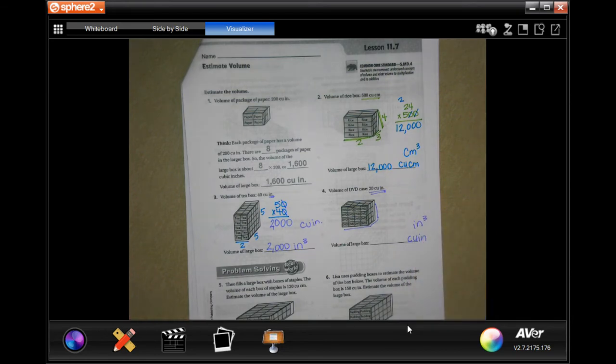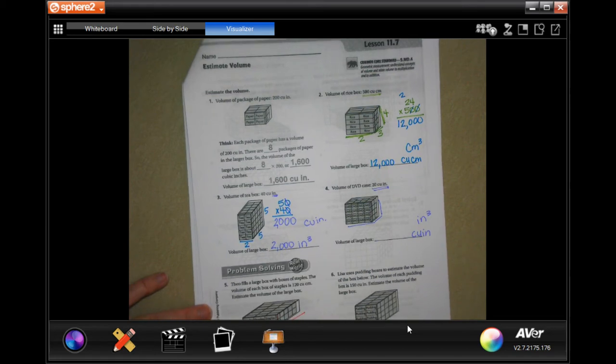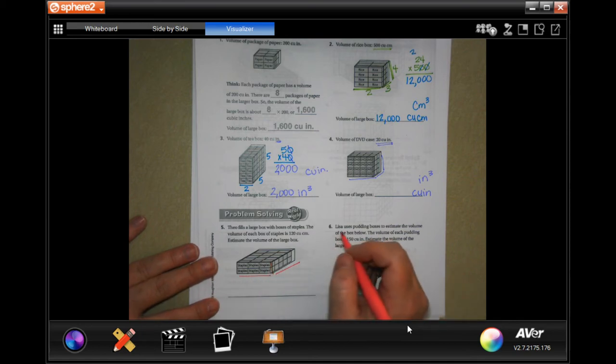Theo fills a large box with boxes of staples. The volume of each box of staples is 120. So we're going to do the same exact thing. There's three by two by one, two, three, four, five. So three times two is six times... sorry, you guys can't see that. Three times two is six times five is 30.